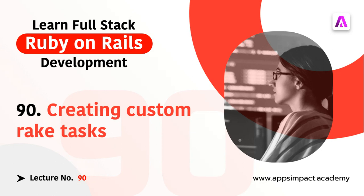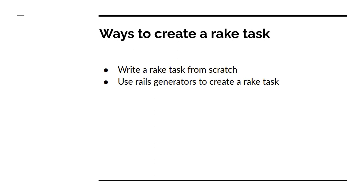Now in this lecture we will learn how to create a rake task in a Rails application. There are two ways to create a rake task. The first way is writing a rake task from scratch, just like controllers or other helper files. You can also use Rails generators to generate a rake task and write your logic there. We will look at both ways. In this part we'll see how to write a rake task from scratch, and in another part we'll see how to create one using the Rails generator.